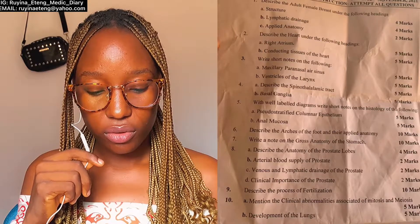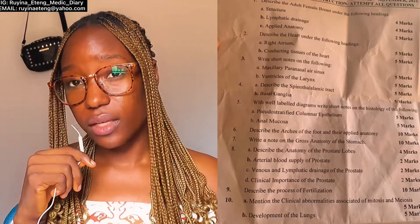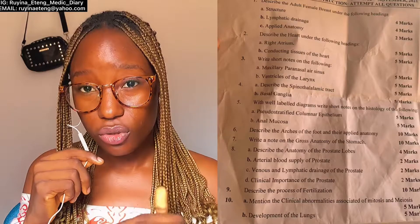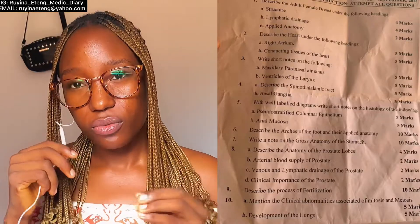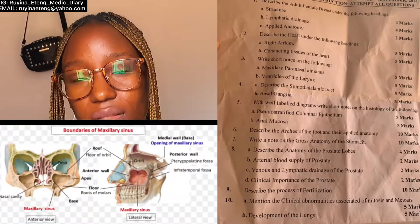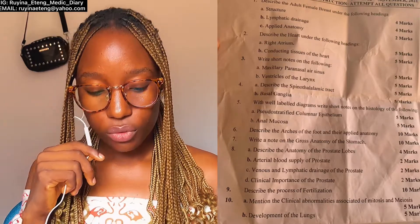The next question said: write short notes on — (a) maxilla paranasal air sinuses and (b) ventricles of the larynx. For paranasal air sinuses, write your introduction: what are paranasal air sinuses, their functions, general stuff about the sinuses. Then draw your diagram, include the location, explain the diagram, cover the key features, the borders, and the relations of the sinuses. When you finish that, the clinical anatomy is very very important.